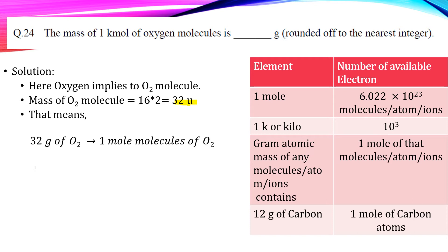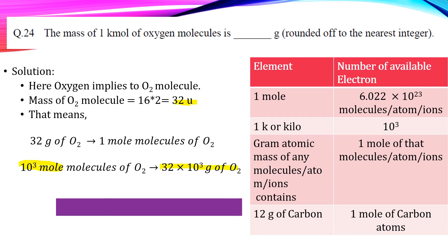So, as we know the mass of 1 mol of oxygen, we can easily calculate the mass of 1 kilomol of oxygen molecule by multiplying 32 with 10³. And our answer is 32,000.